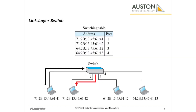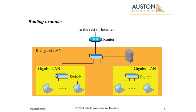A link layer switch, or just a switch, operates in both the physical and the data link layers. As a physical layer device, it regenerates the signal it receives. As a link layer device, the link layer switch can check the MAC address, source and destination, contained in the frame. A router is a layer 3 device; it operates in the physical, data link, and network layers.